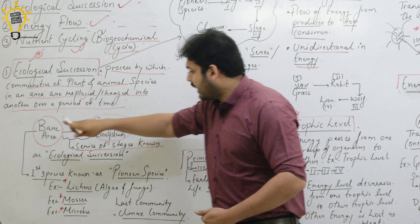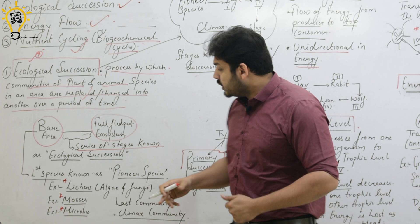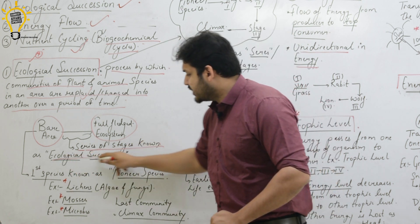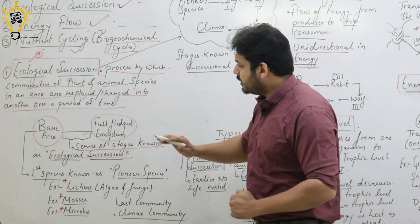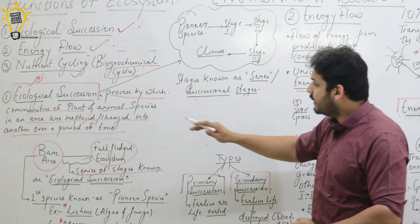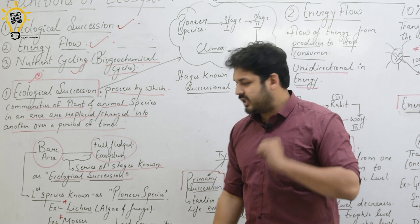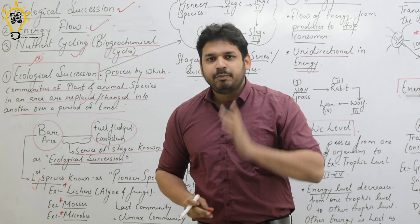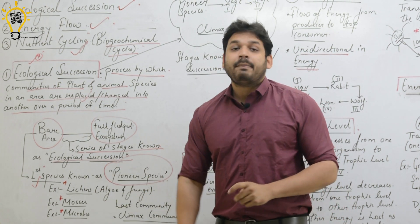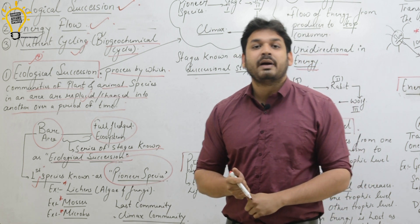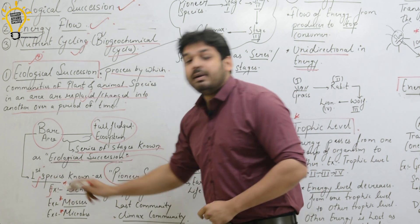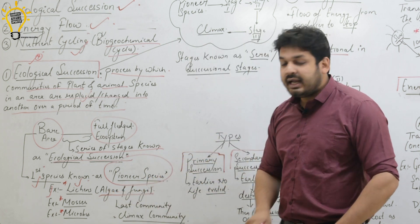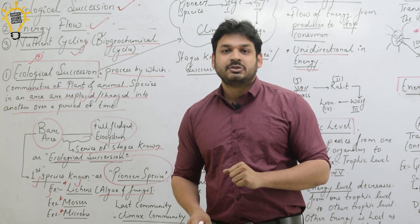So from the bare area, as you can see, a full ecosystem is formed. This whole process is called ecological succession — a series of stages known as ecological succession. In that bare area, the first species that arrives is called pioneer species or pioneer community.